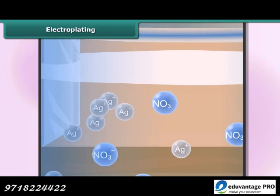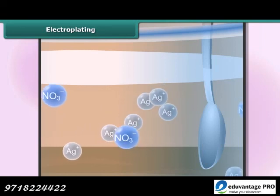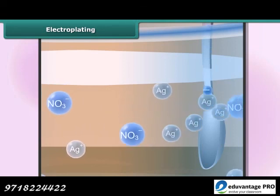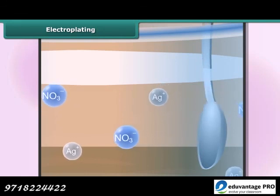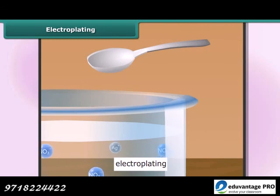As soon as electric current starts flowing through the solution, electrons begin to escape from the silver anode. This results in the formation of positively charged ions which separate from the anode and pass into the solution. There they migrate towards the cathode, attracted by its negative charge. When they reach the cathode, they accept electrons from it and change into silver atoms, which deposit onto the cathode in the form of a thin metallic layer. The thickness of the layer depends on the conditions under which the electrolysis is conducted. This process is known as electroplating.